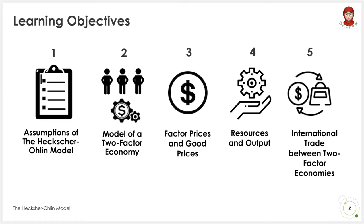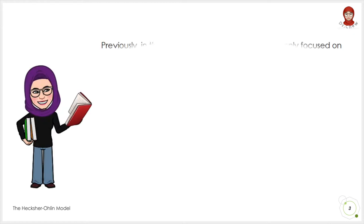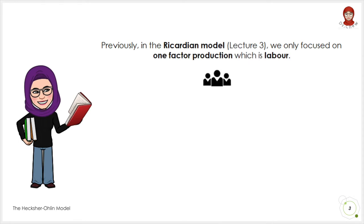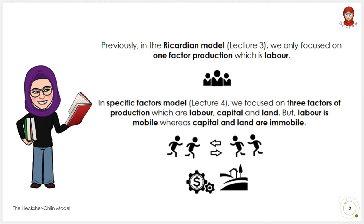Before we begin with the first learning objective, we will have a quick recap on what we have learnt previously. In the Ricardian model, we focus on one-factor production which is labour. Labour is a mobile factor which can move freely between sectors, as illustrated in the example of the cheese and wine industry. In the specific factor model, we discuss three factors of production: labour, capital, and land. Labour is a mobile factor able to move between sectors, whereas capital and land are immobile and specific to the production of only one sector.